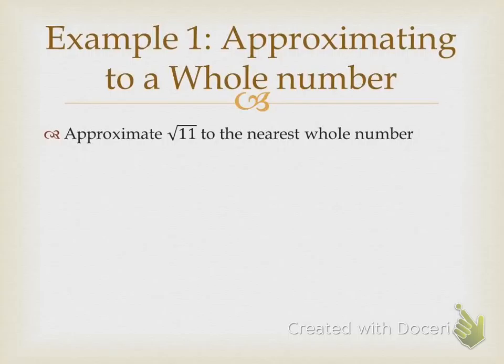Yesterday we learned the definition of a perfect square — that's very important in this lesson. What is a perfect square? You can give an example or the definition. Four is a perfect square because two times two equals four. It has a factor that can be multiplied by itself to equal that number.